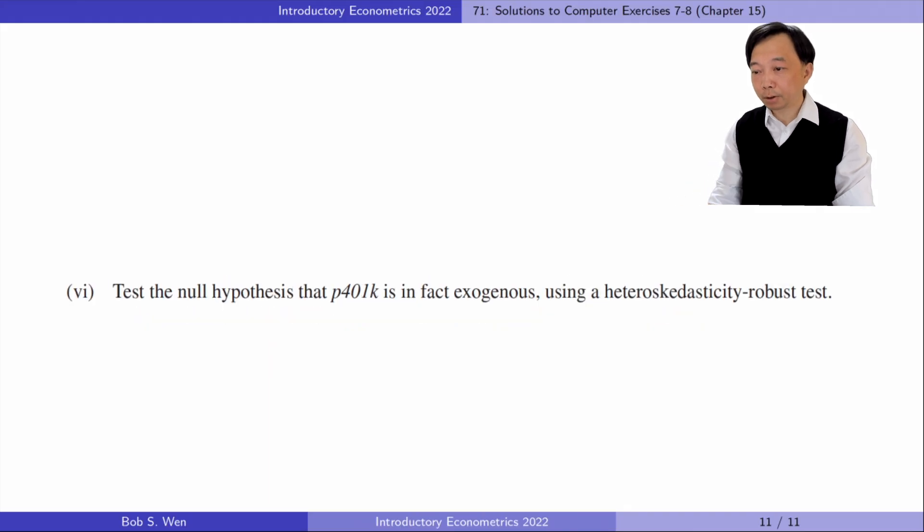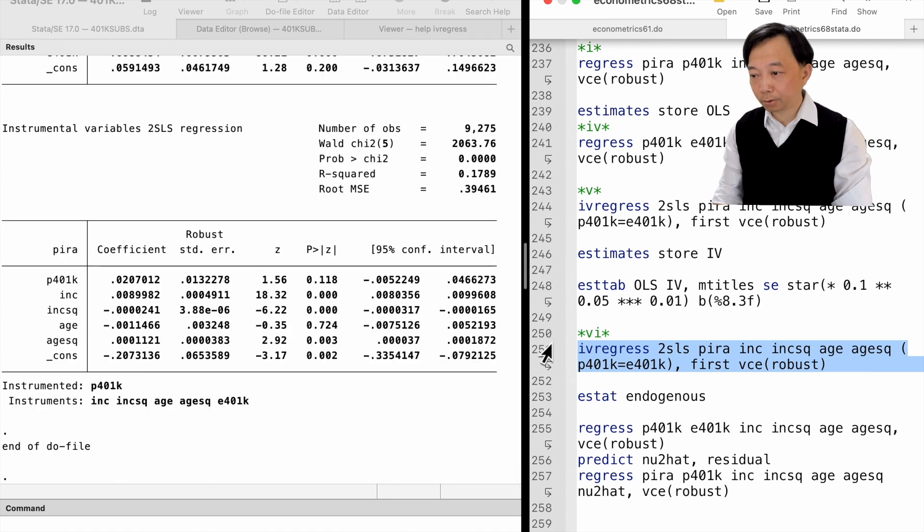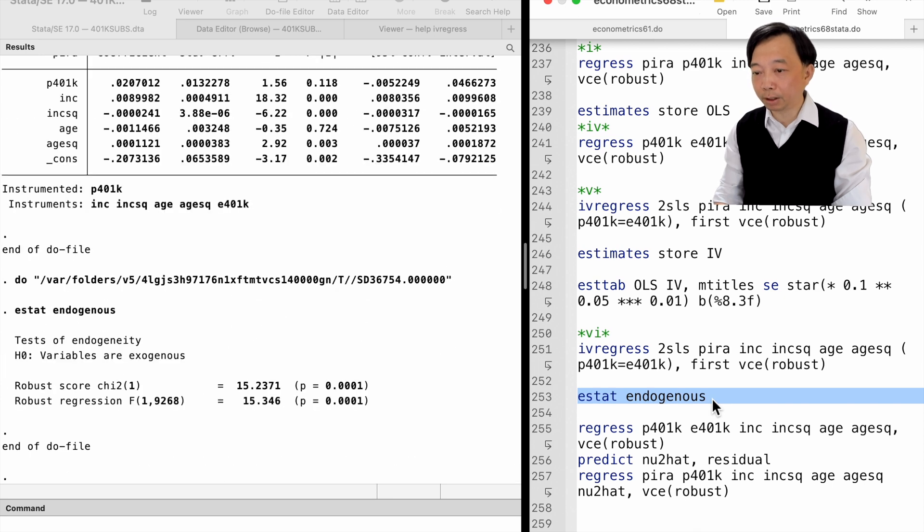In part 6, we will test the null hypothesis that P401k is exogenous using a heteroscedasticity robust test. In Stata, we can use the estat endogenous command following the two-stage least squares estimation to perform the endogeneity test.